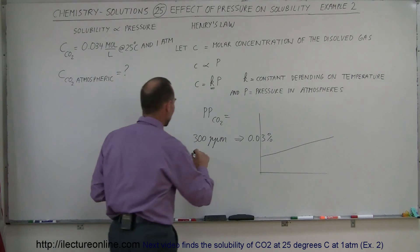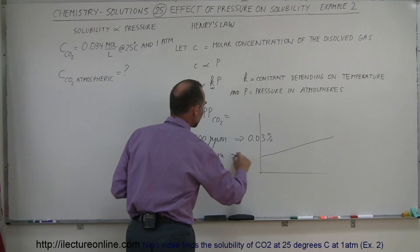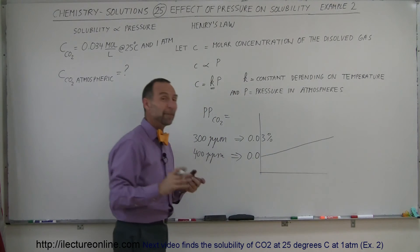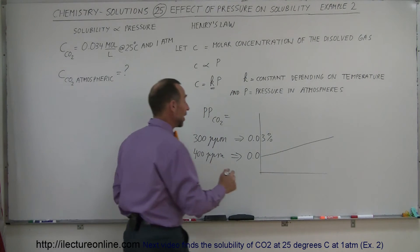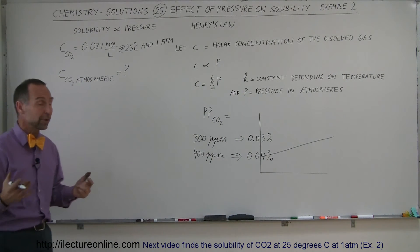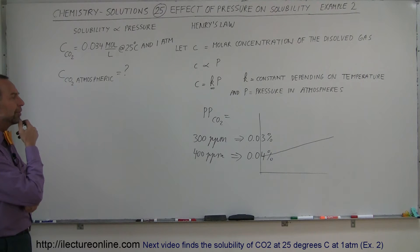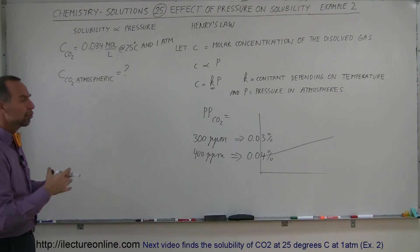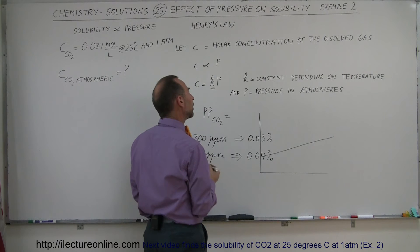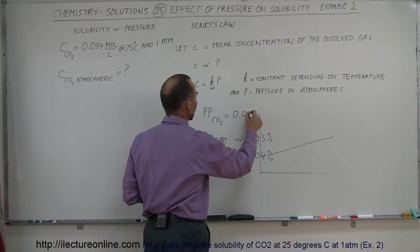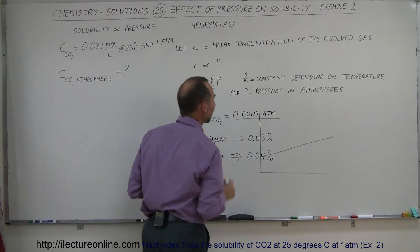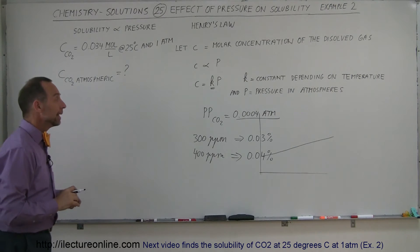Nowadays it's getting to be very close to 400 parts per million, which means that the partial pressure of carbon dioxide is proportional to the abundance of carbon dioxide in the atmosphere, which is now 0.04%. So we've increased from 0.003 to about 0.004 in about a hundred years. That means the partial pressure of carbon dioxide is this percent of the atmosphere, and therefore it would be equal to 0.0004 atmospheres.